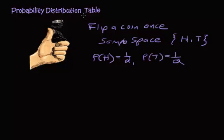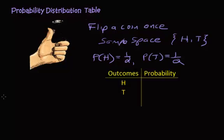Now, what a probability distribution table is, is a table that lists the outcomes on the left-hand side — heads or tails — and then the probabilities on the right-hand side. And that's it. That's a probability distribution table.